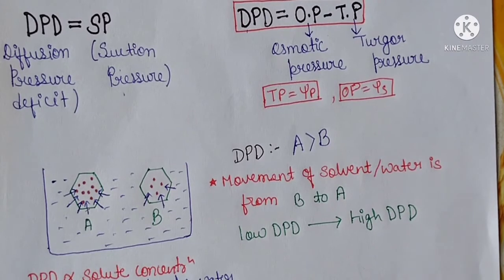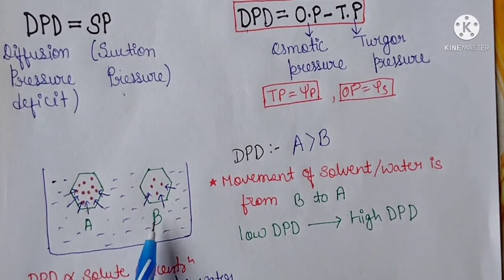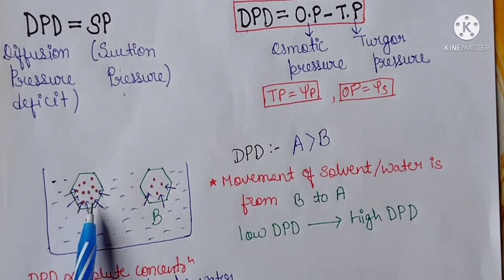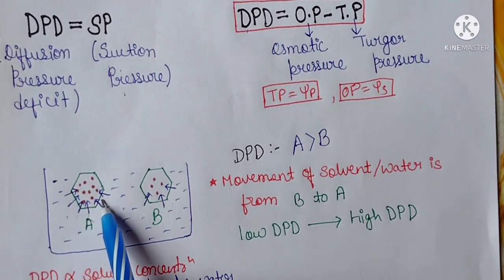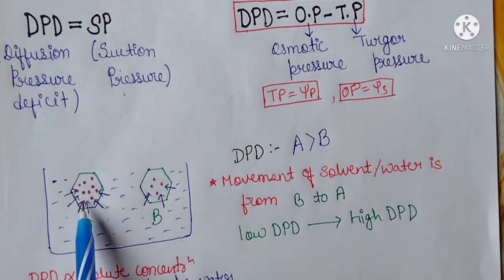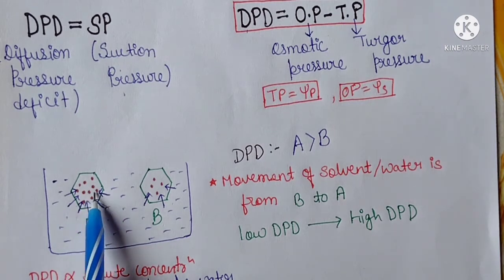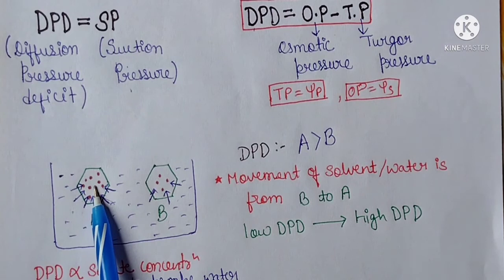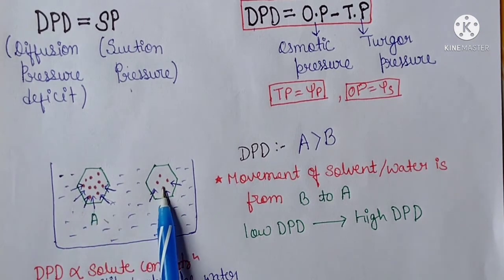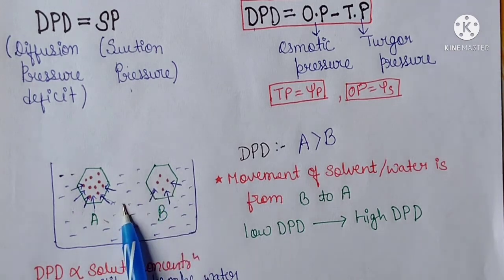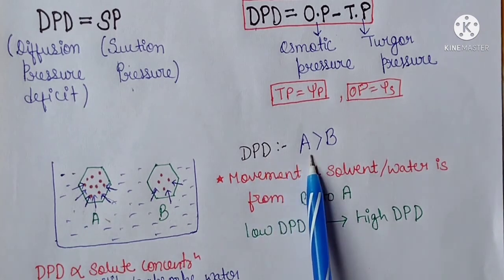Let us take two cells — Cell A and Cell B. In Cell A, the concentration of solute is increased compared to Cell B. Where solute concentration is higher, water concentration is reduced, so the absorption of water will be increased. The solute concentration in Cell A is higher, so its DPD is more than Cell B.